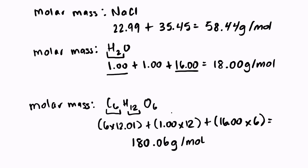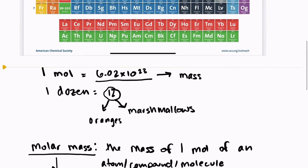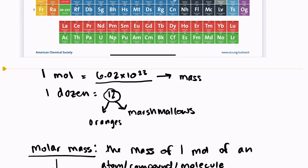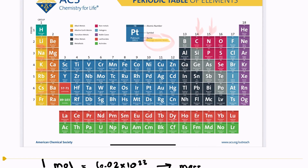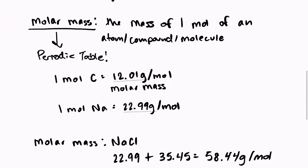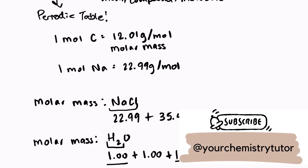Just to recap — molar mass is equal to the mass we find on the periodic table. Just like one dozen oranges does not weigh the same as one dozen marshmallows, one mole of one atom will not weigh the same as one mole of another atom. To find the molar mass of a compound or molecule, we just add up all of the masses in that compound or molecule. If you have any questions, leave a comment and check out my other videos as we continue working on converting between units and stoichiometry. Thanks for stopping by!